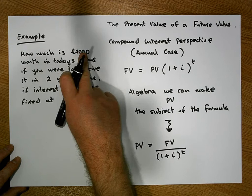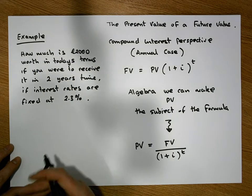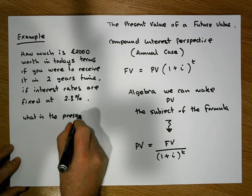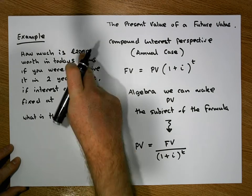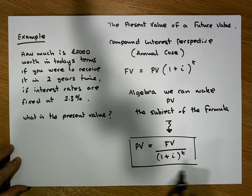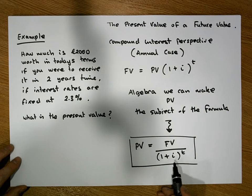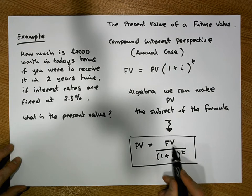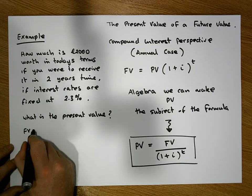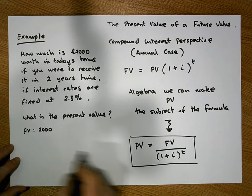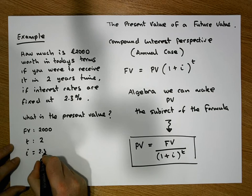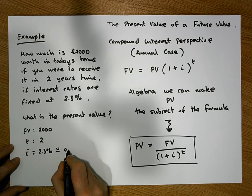I'm asking: what is the present value of this 2000 euros that we're going to receive in two years' time? To calculate the present value we need to know the future value, the interest rate, and how far in the future we'll receive it. In our situation the future value is 2000 euros and the interest rate is 2.3%, or as a decimal, 0.023.